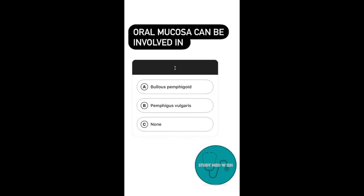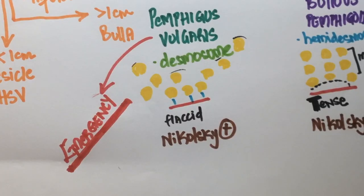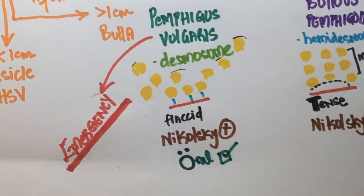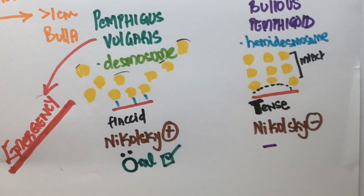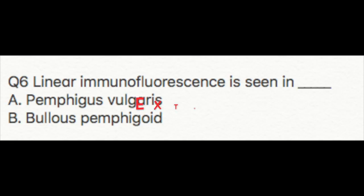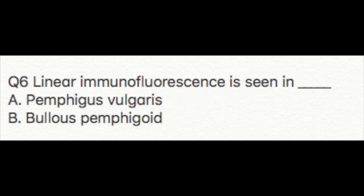Question five: oral mucosa is involved in which condition? The answer is pemphigus vulgaris. Desmosomes are present in the oral mucosa as well, so the antibodies will attack them there too. The oral mucosa is spared in bullous pemphigoid.